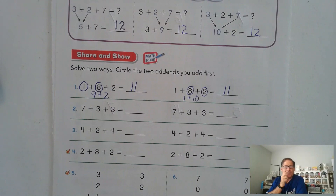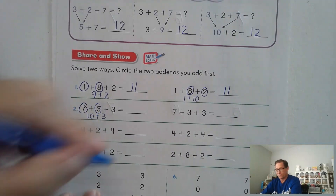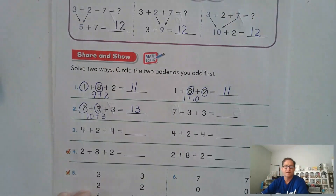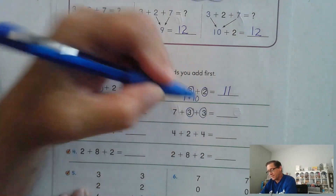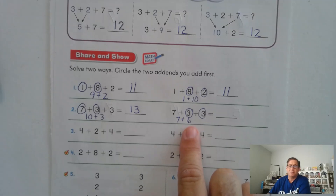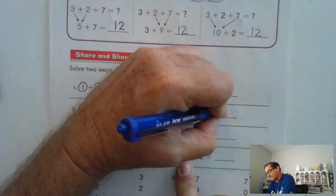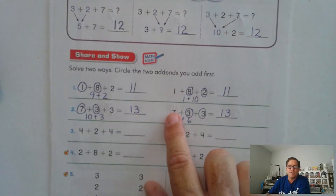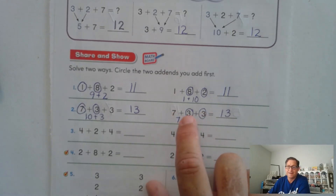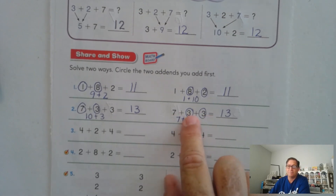Seven plus three plus three. I know seven and three makes a ten, and ten plus three is simply thirteen. But maybe you looked at three plus three — that's a doubles fact. And seven plus six: six plus six is twelve, plus one is thirteen. Or you could have circled the seven and the three and added the remaining three — seven plus three makes a ten, ten plus three is thirteen.